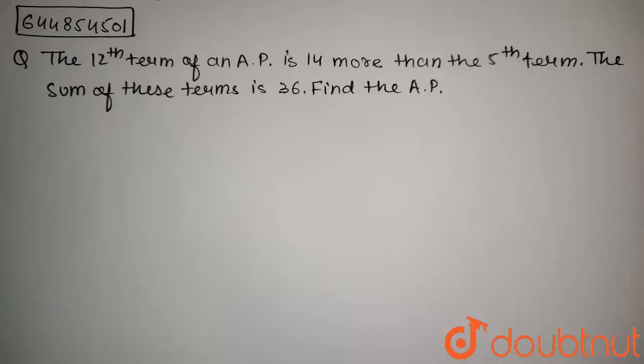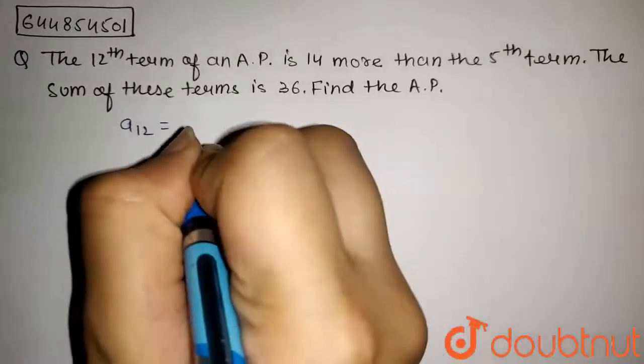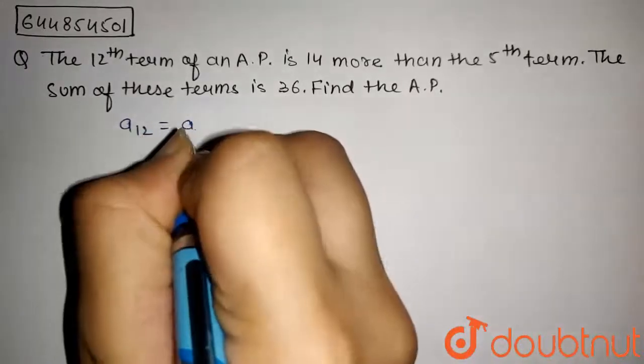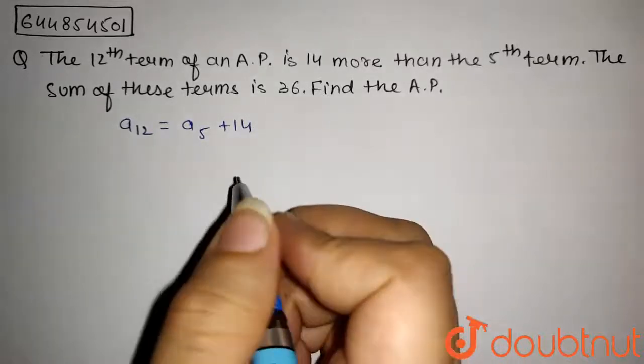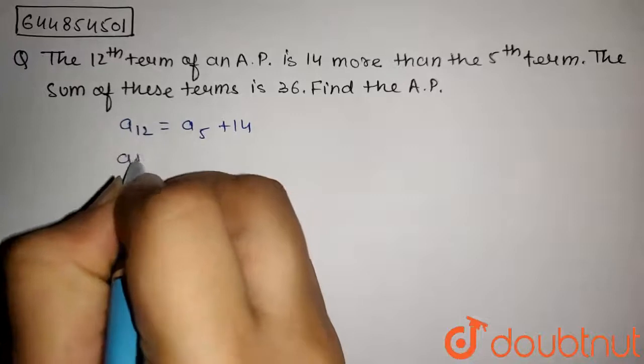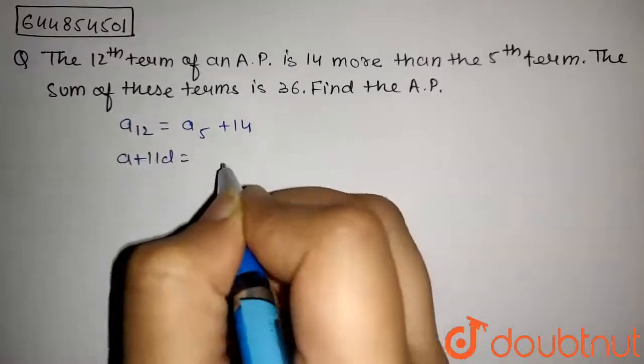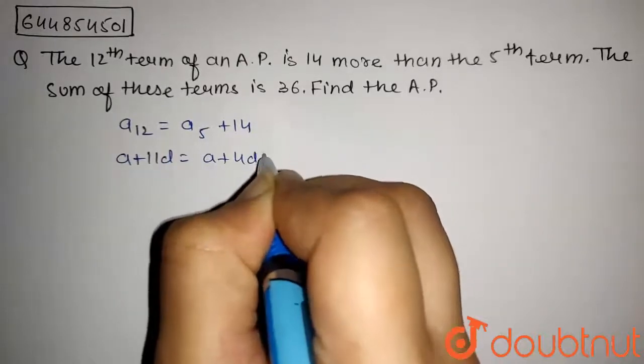In this question, we have given that the 12th term is 14 more than 5th term. So it will be A12 equals A5 plus 14. Now, the 12th term of AP can be written as A plus 11D, and the 5th term of AP can be written as A plus 4D plus 14.